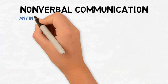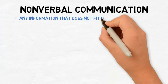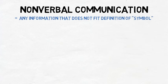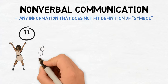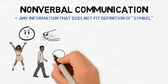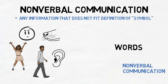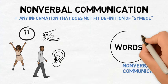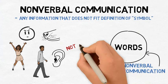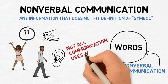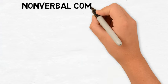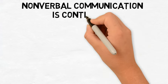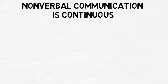Non-verbal communication is any information sent from one person to another that does not fit the definition of a symbol. Non-verbal communication can include our facial expressions, our posture, our movements, how we smell, how we sound when we say something, and more. Non-verbal communication surrounds our use of words. However, not all communication instances use words — sometimes we communicate with each other without uttering a single word at all. Unlike verbal communication that is discrete, non-verbal communication is continuous and can be more difficult to decipher.